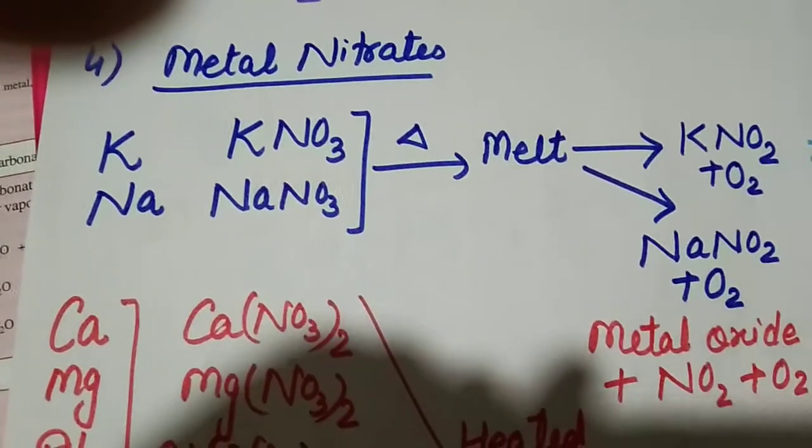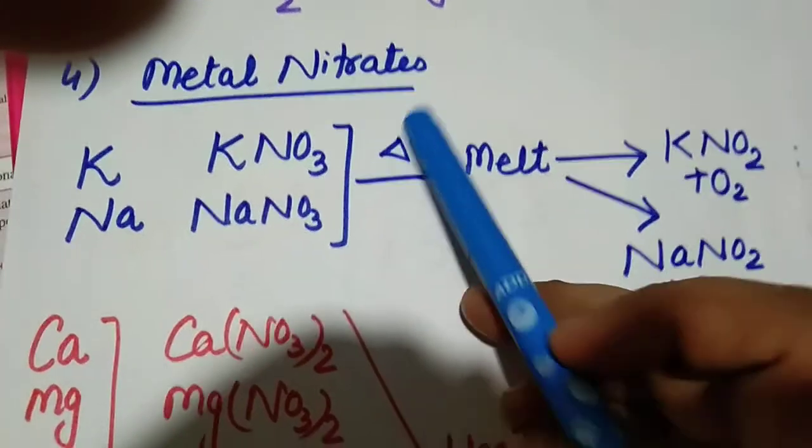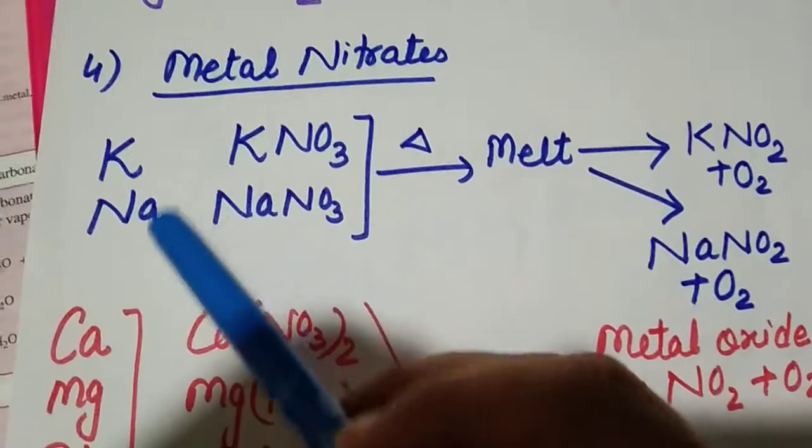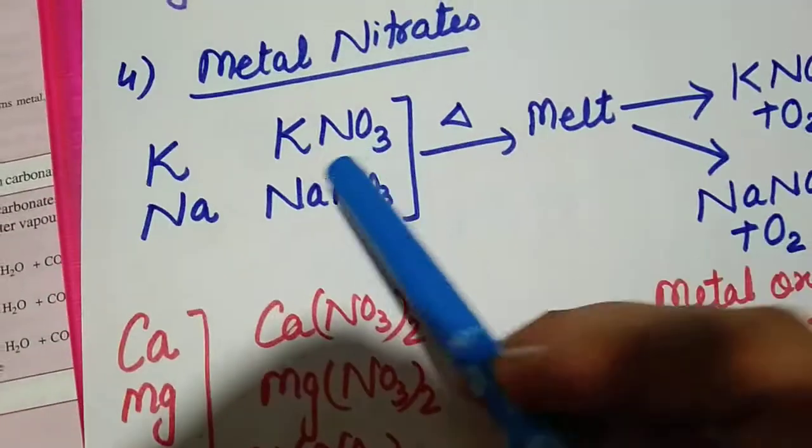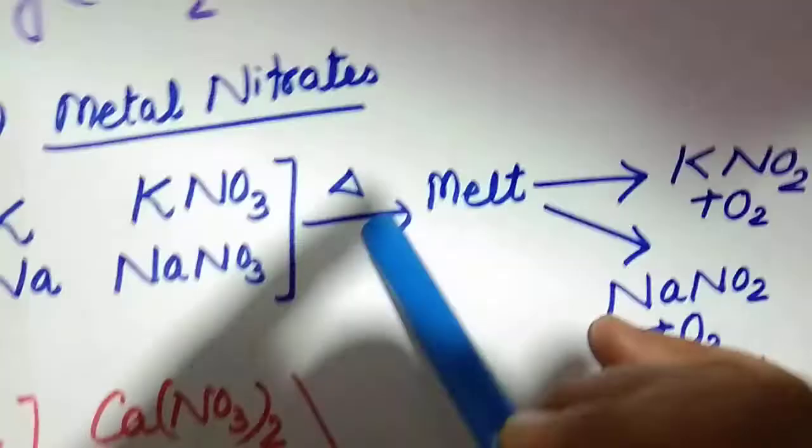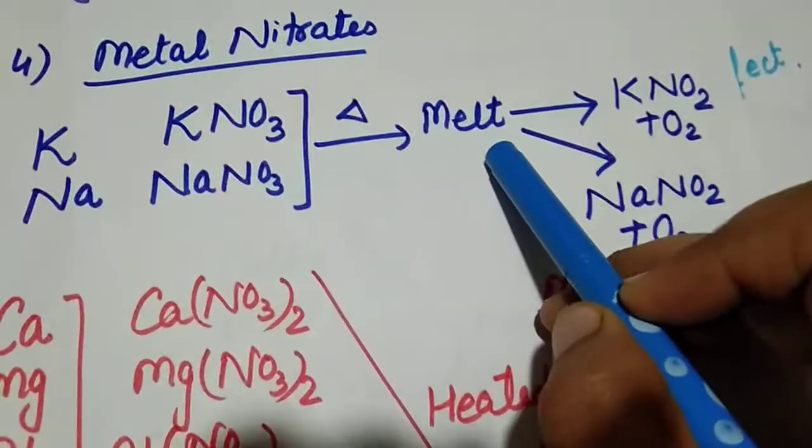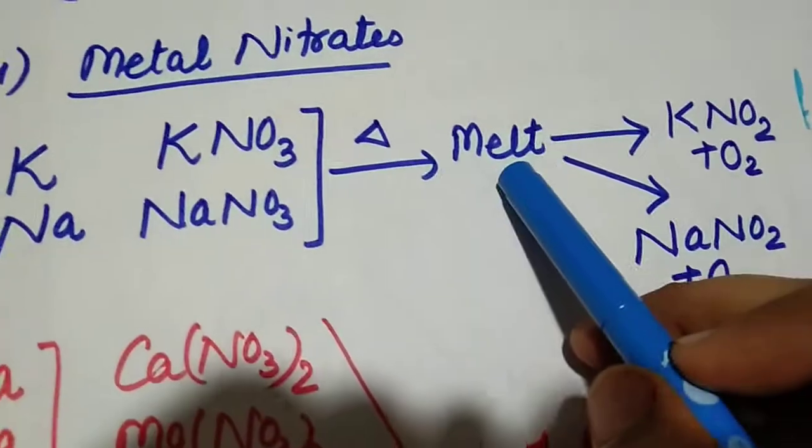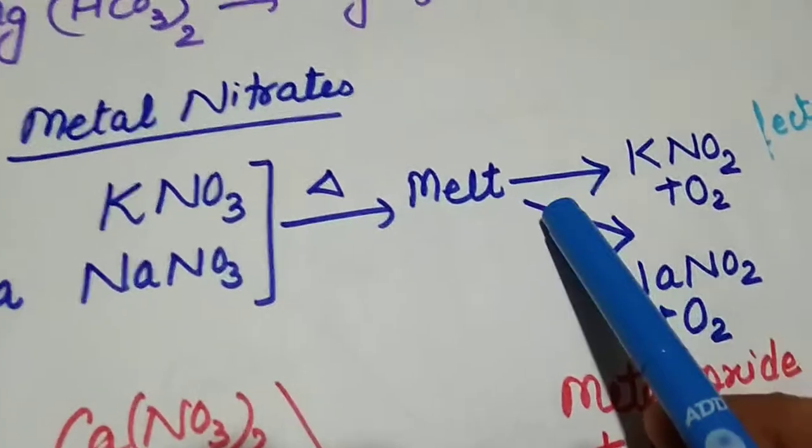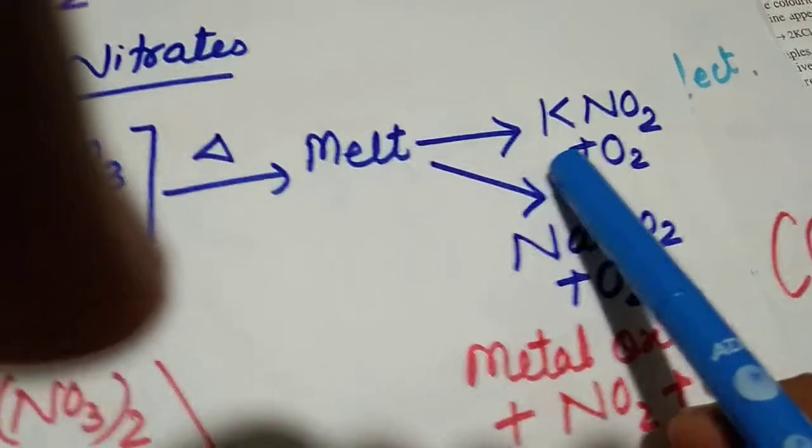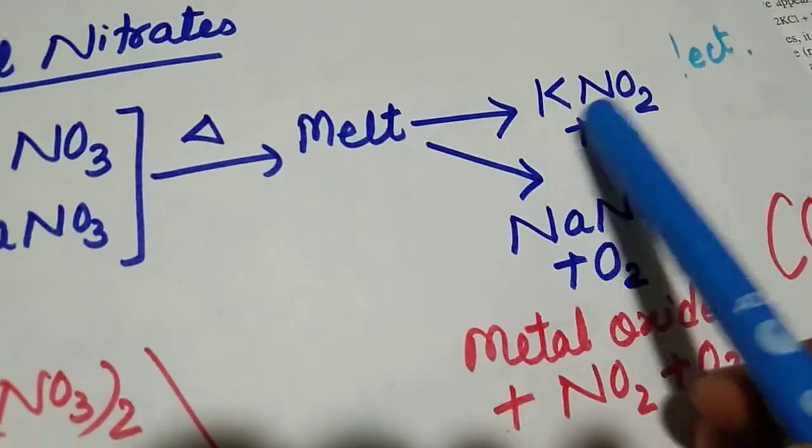Next category we have metal nitrates. Potassium or sodium nitrates are KNO3 and NaNO3. When they are heated, what do they give us? They melt first of all. After melting, what happens? They decompose. Upon decomposition, they produce potassium nitrite KNO2 plus oxygen, and sodium nitrite plus oxygen.